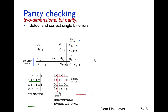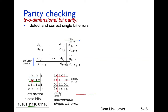We are going to discuss two-dimensional bit parity checking. Suppose we have data bits arranged in rows and columns. For example, the first five bits are put in the first row, the second five bits in the second row, and the third five bits in the third row.